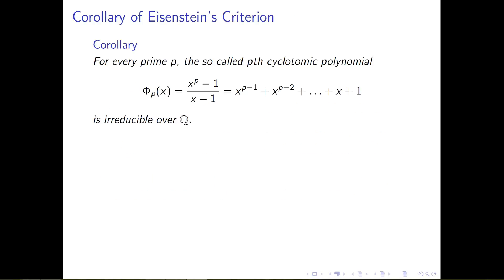Don't disregard Eisenstein's criterion just yet — it's still a really cool theorem. I want to show you a really nice corollary of Eisenstein's theorem. What's good about this corollary is that it's important in many ways: the statement of the corollary is useful, and hopefully later in the course we'll study cyclotomic polynomials in more detail. However, the proof of this corollary is equally important — it's got a really nice trick in it that I'm going to expect you to be able to duplicate.